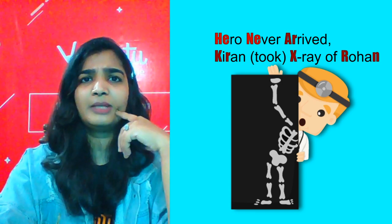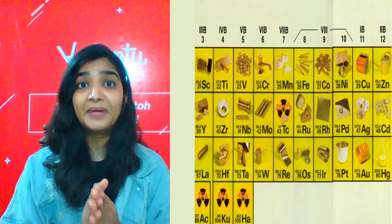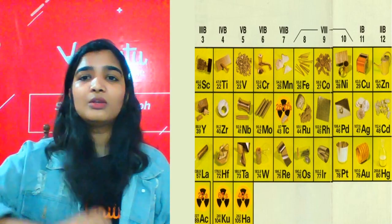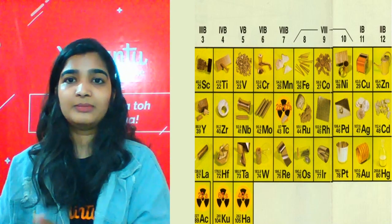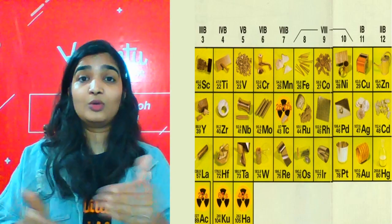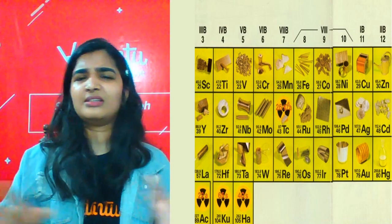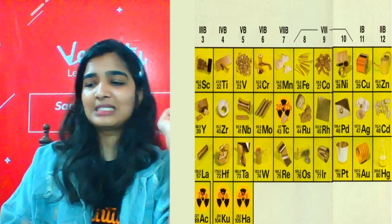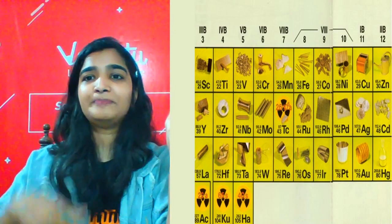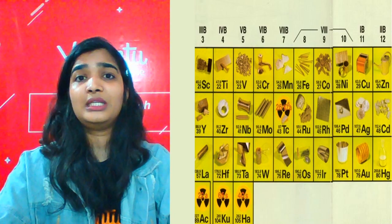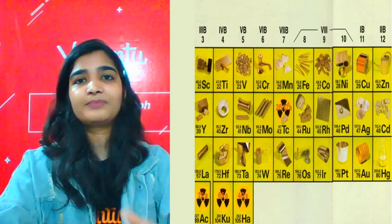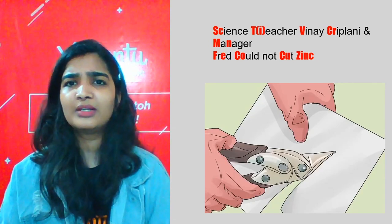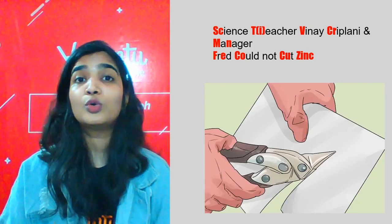We are done with group 18 — there are only 18 groups in the periodic table. But remember, I taught group 1, group 2, then skipped to group 13. The D-block elements, we usually don't go group-wise because their properties are very unique. They are also called transition elements — they have variable oxidation states, which is why they are used as reducing agents, catalysts, and so on. Almost all industrially important elements are in the D-block. So the D-block elements will be studied according to period. Period 4: 'Science teacher Vinay Kriplani and manager Fred could not cut zinc.'